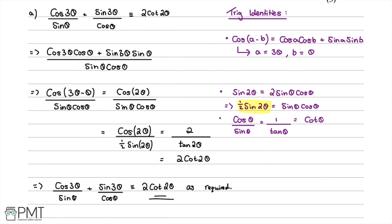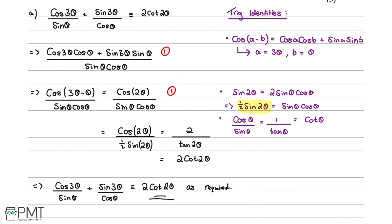This question was worth four marks. The first mark was for combining into a single fraction. The second for applying the cos(a − b) identity. The third for using the double angle formula to reach cos(2θ)/sin(2θ). The fourth for knowing cosθ/sinθ = cotθ and concluding with a correct statement.